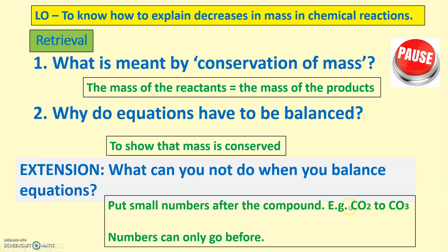Numbers can only go before the actual compounds or the elements. It can only go before the CO2 there to make 2 CO2 or before the CO3 there. You cannot change the actual compound itself. That will change the structure.